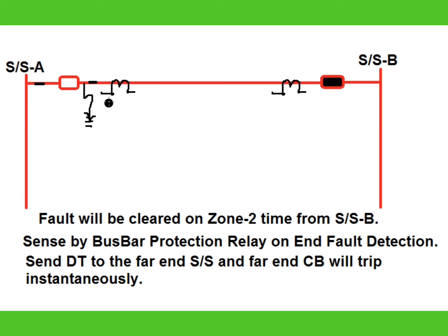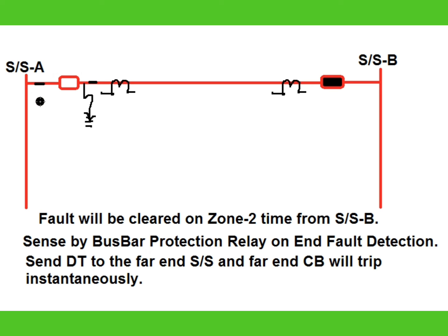The conditions under which a dead zone fault occurs: it can occur if a fault happens between the CT and the open circuit breaker. Under this fault condition, if the fault is charged from the remote end, a fault current will flow. If dead zone fault protection is activated in the bus bar relay at substation A, then the bus bar relay at substation A will detect this fault as a dead zone fault, even though the bus side isolator is closed — it will not detect this current as a bus fault.